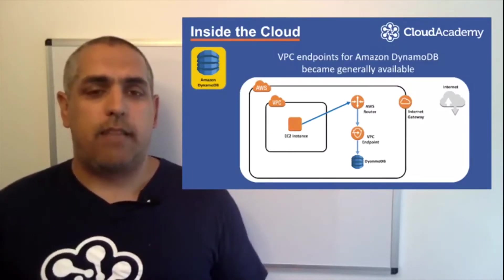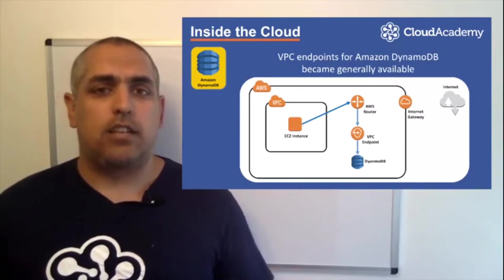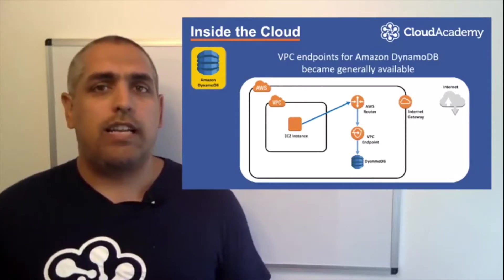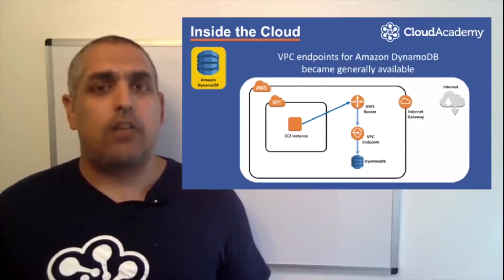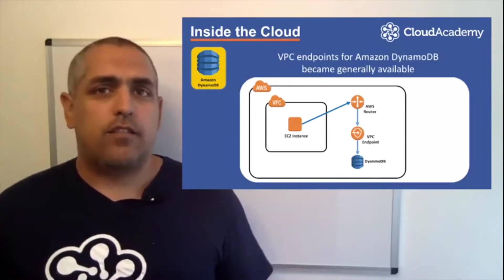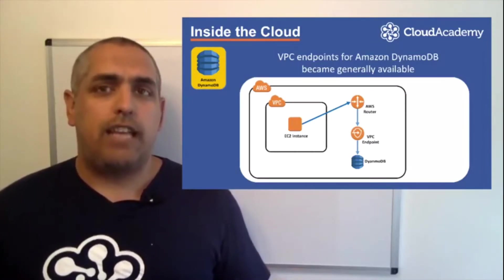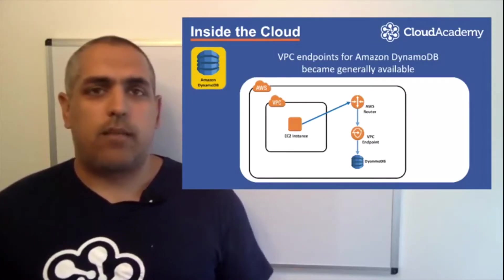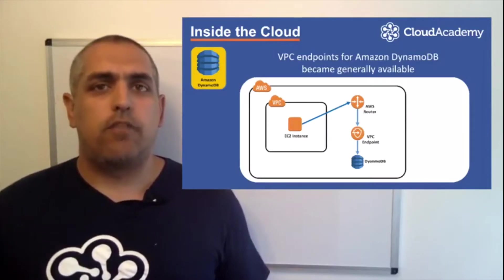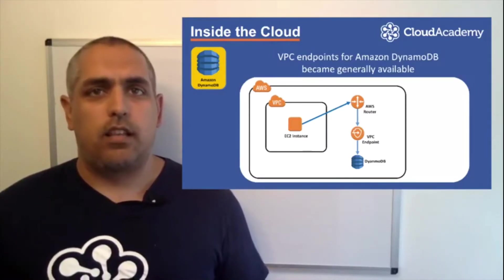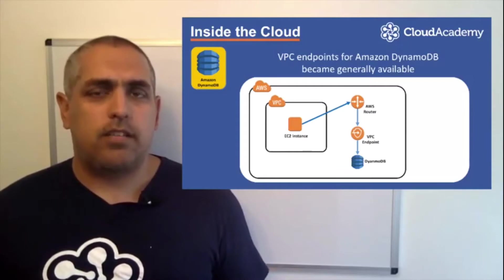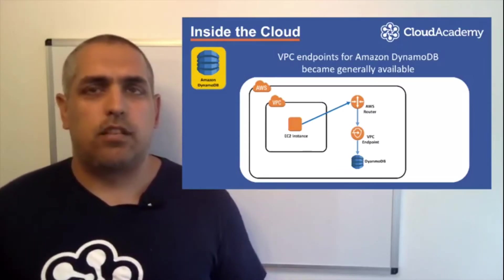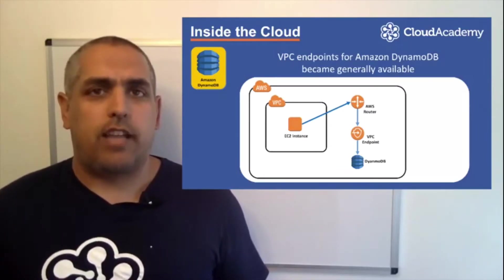Using these new VPC endpoints to connect to DynamoDB instead of the internet has a number of benefits. You would no longer need an internet gateway or NAT gateway unless other services required this, removing any NAT gateway charges. The removal of these gateways also increases security by reducing exposure of your VPC. You could also use IAM policies to restrict access to DynamoDB from these endpoints from specific networks or applications.